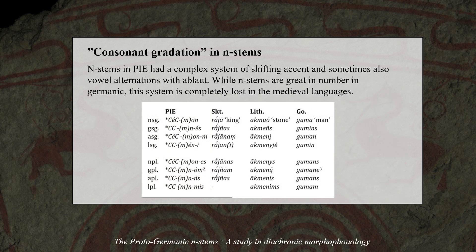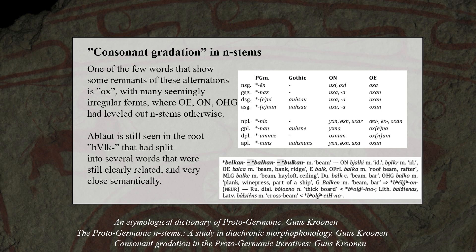The Indo-European n-stems, later known as weak nouns in Germanic, originally had a very complex system of shifting accents and sometimes also ablaut within their paradigms. While these n-stems grew in number and became very common in Germanic, the system of inflection within these forms was largely levelled out and completely lost in the medieval languages. One example of remnants of these more complex alternations would be the word for 'ox', showing umlaut reflexes of the various endings that were greatly levelled out in most descendant languages.